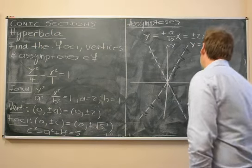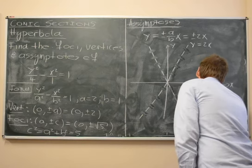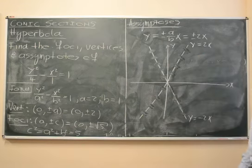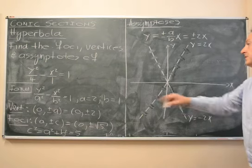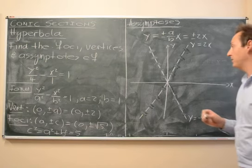y is 2x. y is minus 2x. So now where's our vertices? Our vertices are at (0, plus or minus 2).